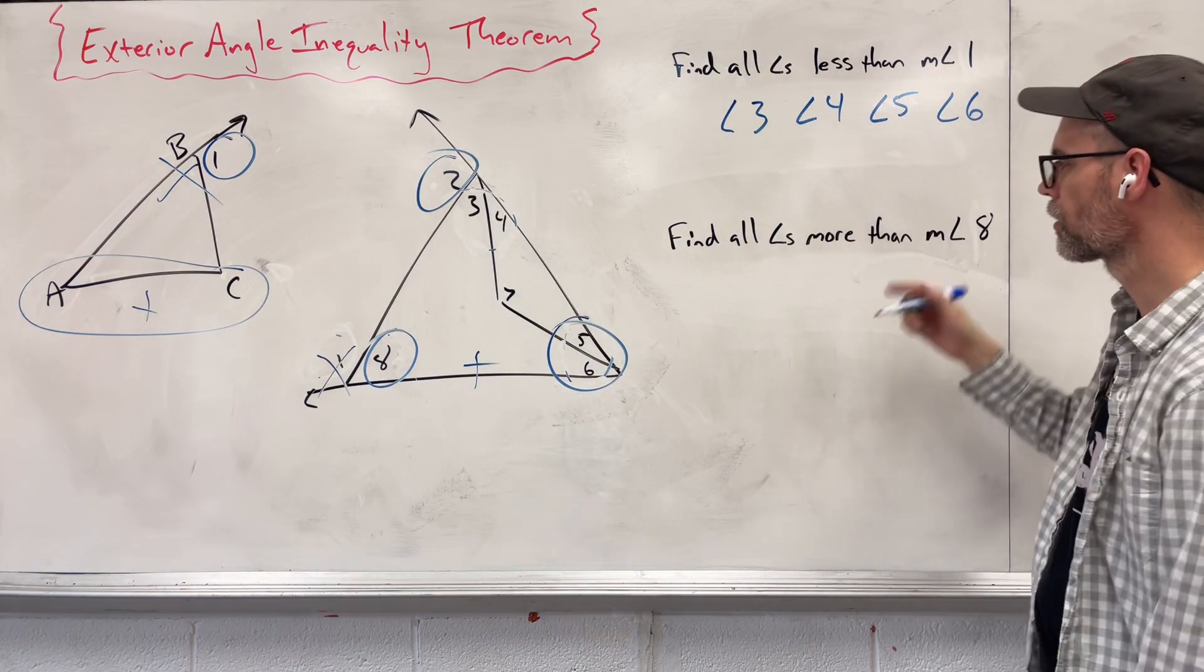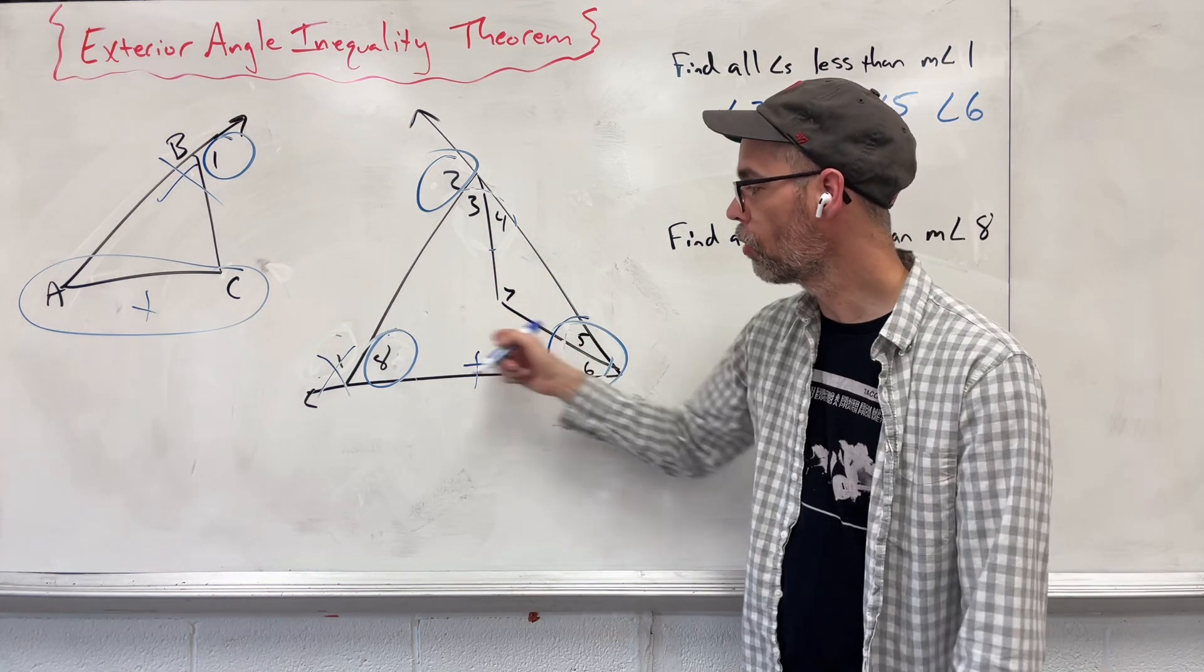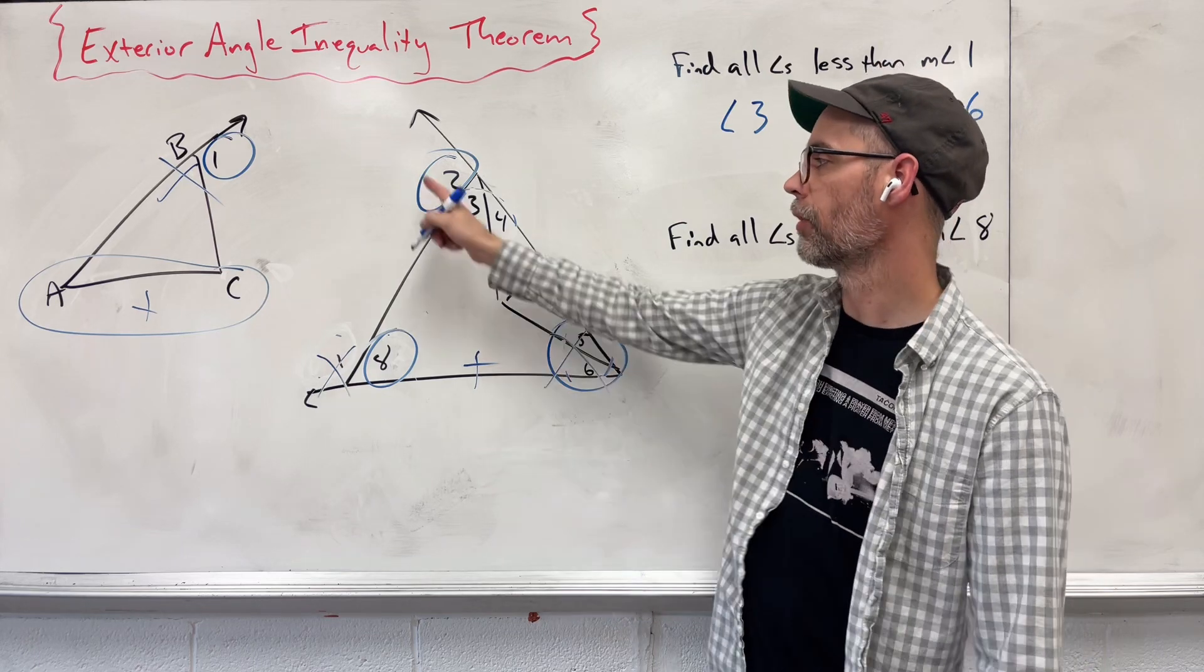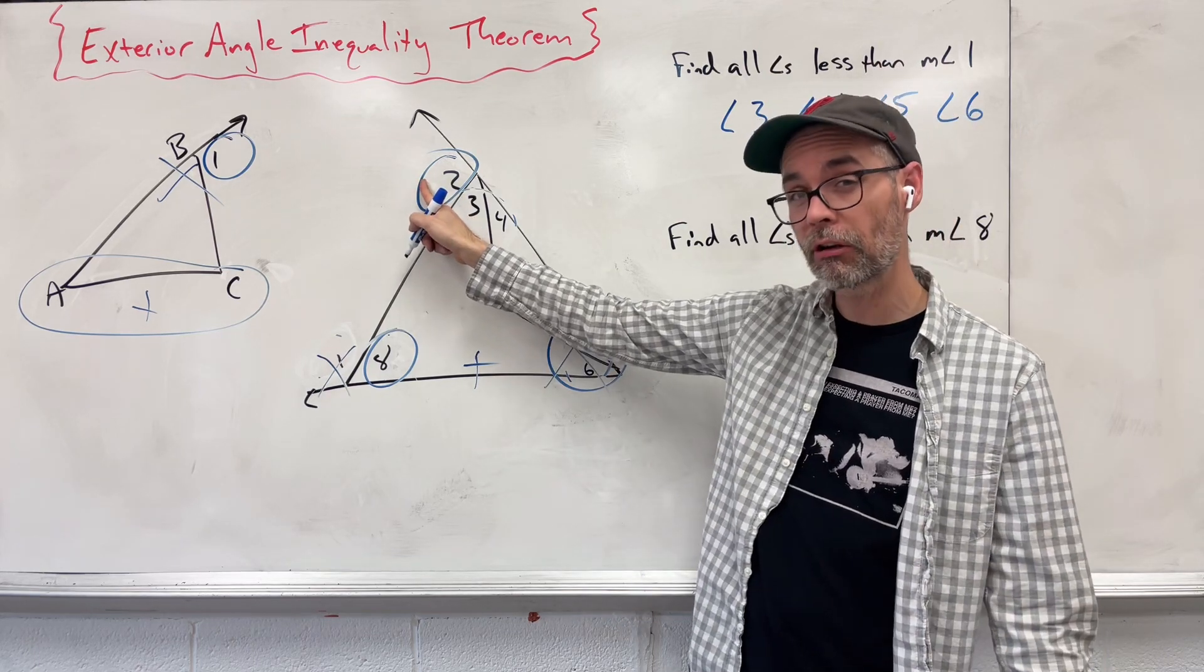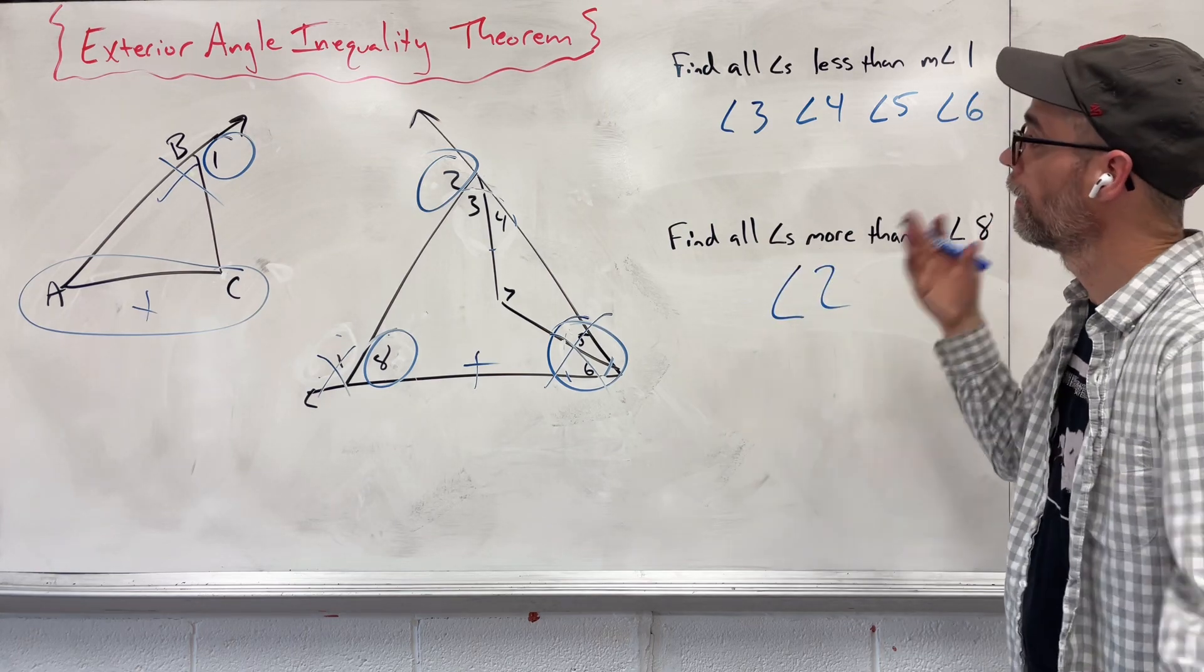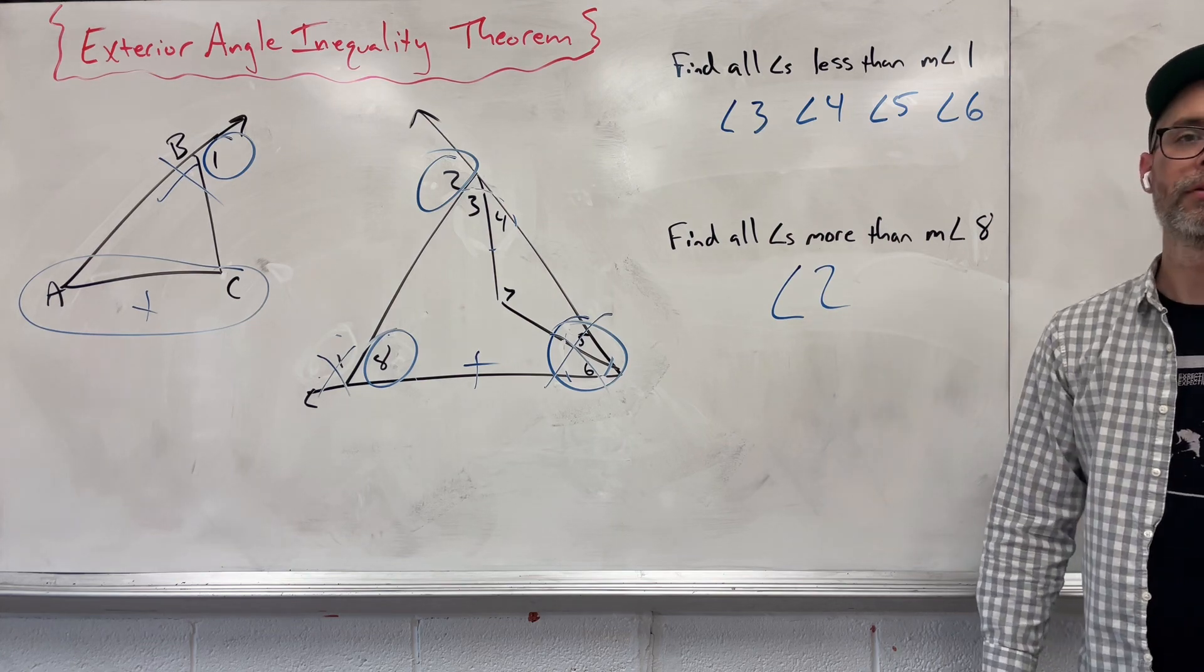But that's not exactly what's being asked. Find all the angles more than 8. I don't know when we're both on the inside what's happening here, so let's ignore that. The only thing we do know is that this is an exterior and outside angle. So that's got to be bigger. And that's all we got for that one. And that's using the Exterior Angle Inequality Theorem.